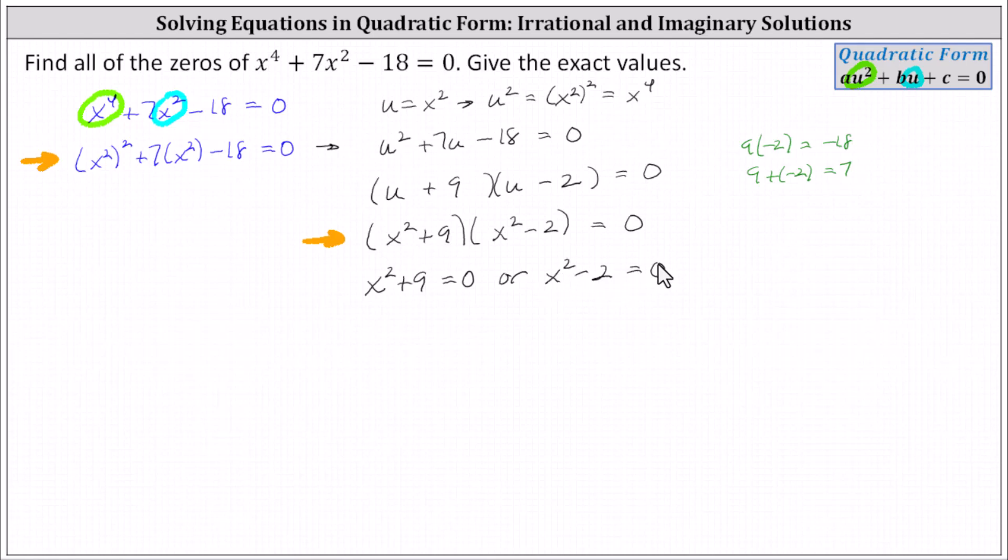And now we'll solve these two equations using square roots. For the equation on the left, we first isolate x squared by subtracting nine on both sides, which gives us x squared equals negative nine. And now to undo the squaring and solve for x, we take the square root of both sides of the equation. Remember, we include a plus or minus on the right, so that we get both solutions.